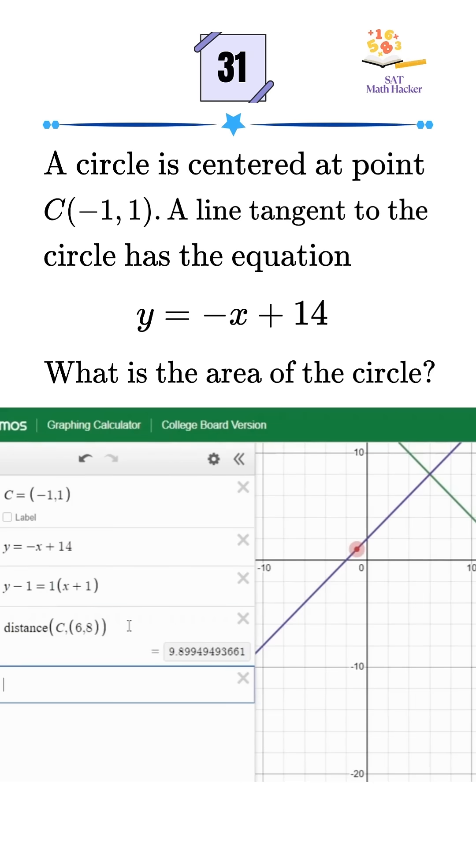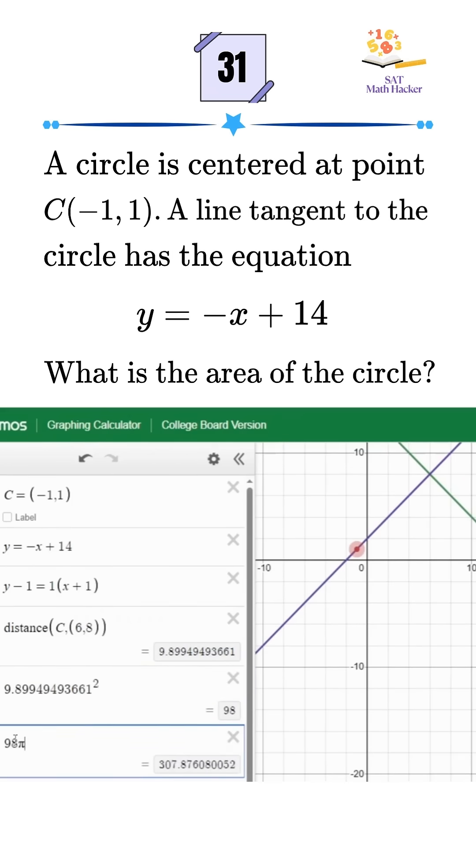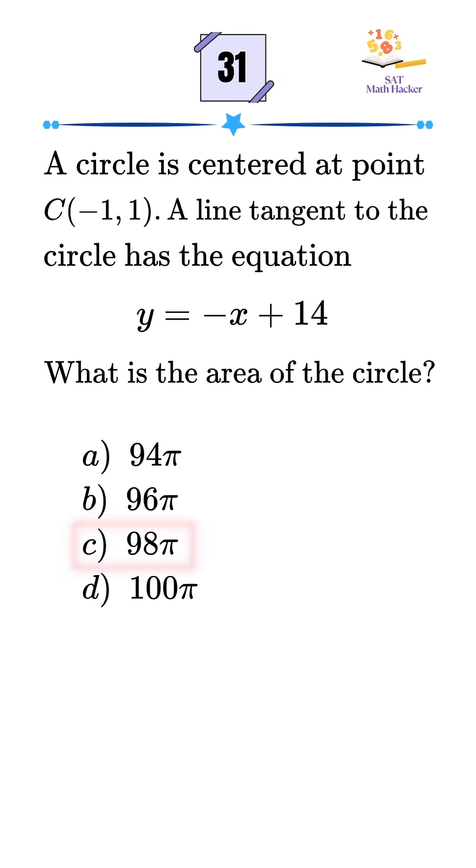Since this gives the radius and the area is pi r squared, just square the radius and multiply by pi. So the area is 98 pi. That matches option C.